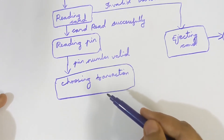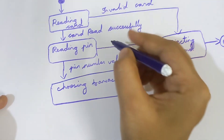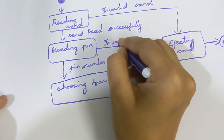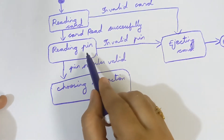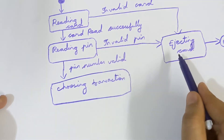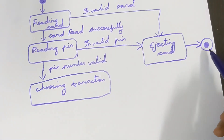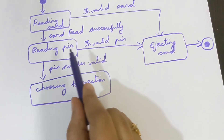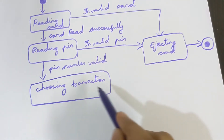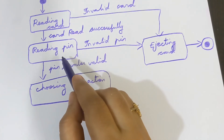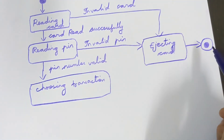For example, if the pin number is not valid — it is invalid — the state will directly move to 'Ejecting Card.' The event here is 'Invalid Pin.' When the invalid pin event happens, the state changes from Reading Pin to Ejecting Card, and once the card is removed the process ends there itself.